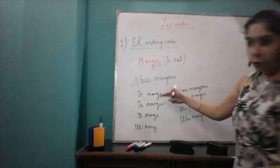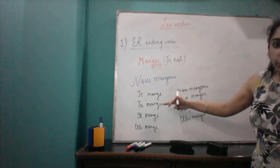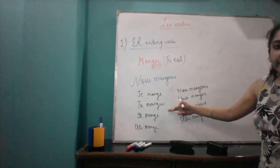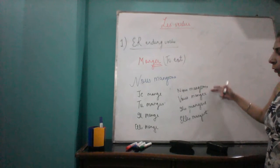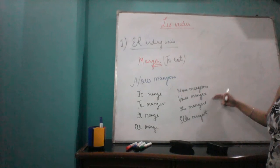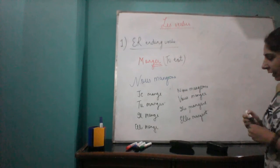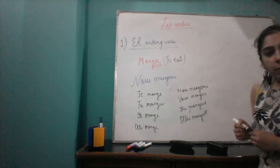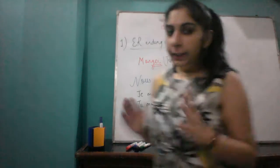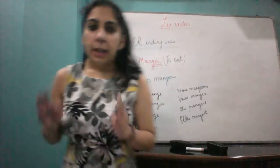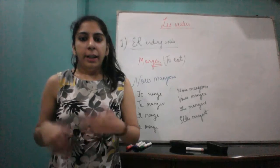So the conjugation of 'manger' is: je mange, tu manges, il/elle mange, nous mangeons — this is the change with nous — vous mangez, ils/elles mangent. Everything remains the same; it is just the change that comes with nous.